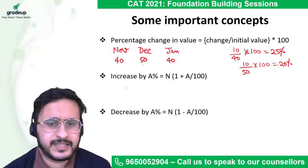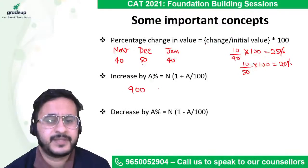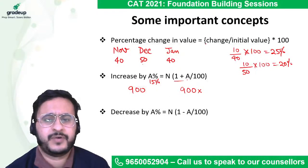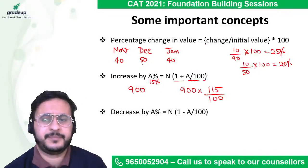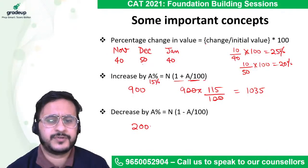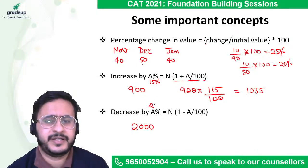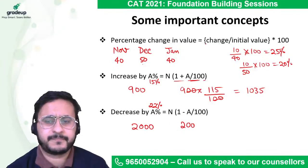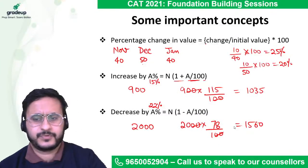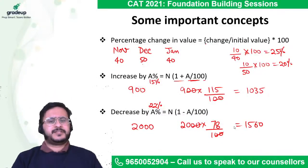For percentage increase: if the price of some item was 900 rupees and it increased by 15 percent, you calculate 900 into (100 + 15)/100, that is 115/100, giving you 1035. Similarly, if a bag was 2000 rupees and it decreased by 22 percent, 100 minus 22 is 78 percent, so you take 78 percent of that, giving you 1560. This is how you handle percentage increase and percentage decrease.